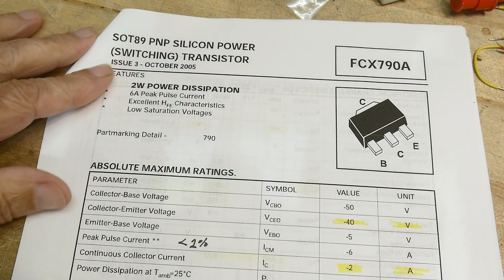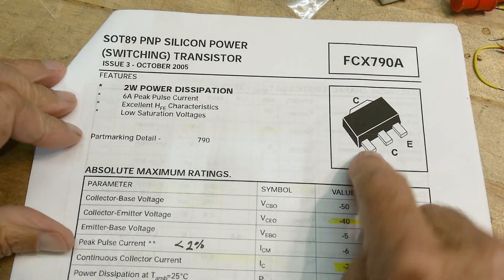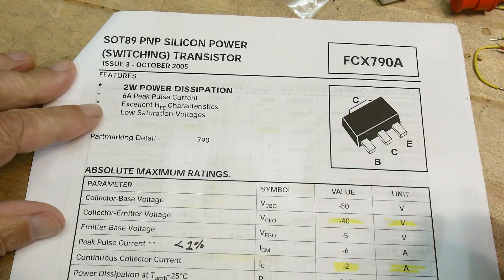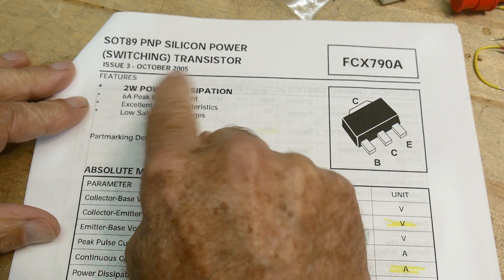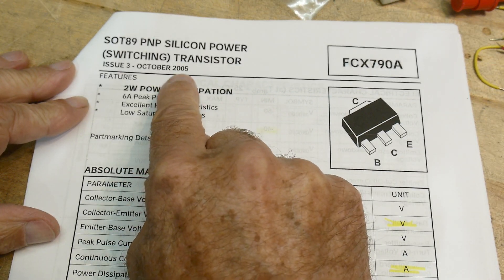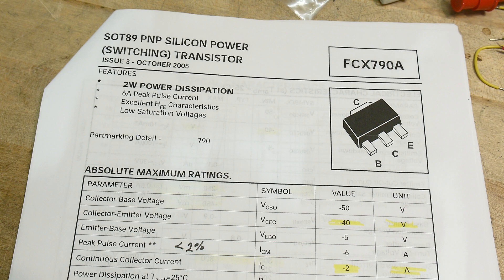Alright, there you go. Chip of the day was a little strange little transistor, an FCX790A, October 2005. So I don't know if you can get these still or not.